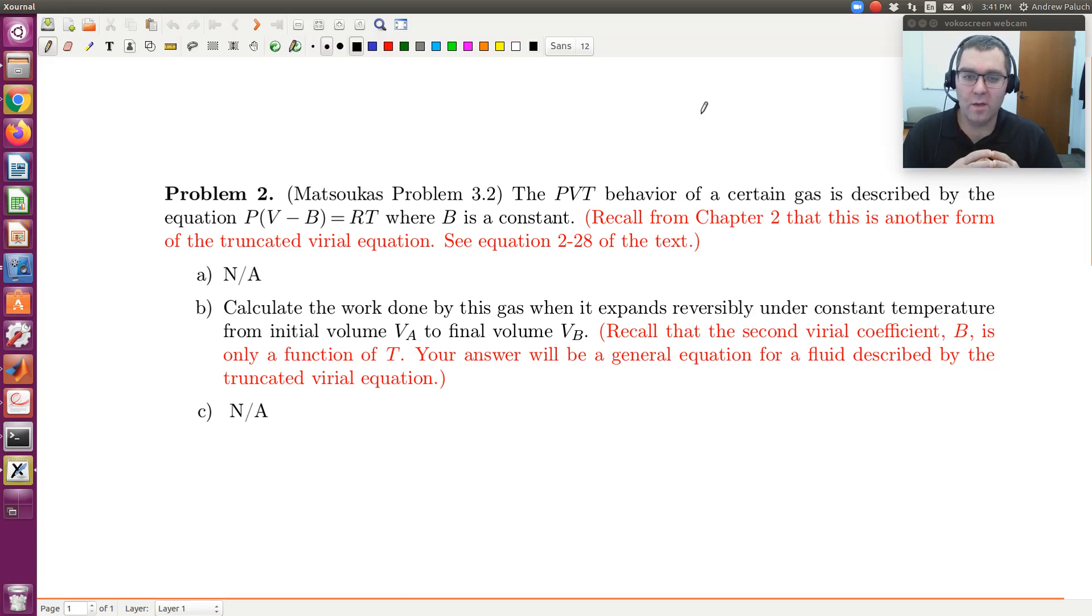Calculate the work done by this gas when it expands reversibly under constant temperature from initial volume VA to final volume VB. The notes remind us that this equation is just another form of the truncated virial equation, where B is the second virial coefficient. The virial coefficient is only a function of T, so since T is constant, B is also constant.